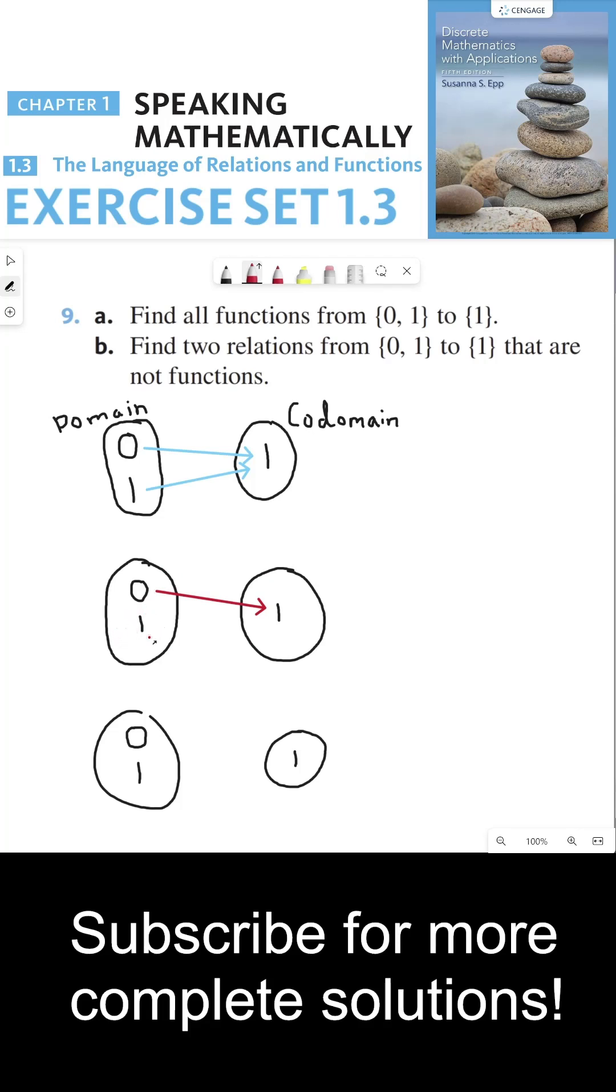We can also make a relation where we send 1 to 1 and we send 0 to nowhere, in which case I don't know what the output is when I plug in 0 into my function, even though 0 is supposedly the domain of this function. That's why this is not a function, this is just a relation.